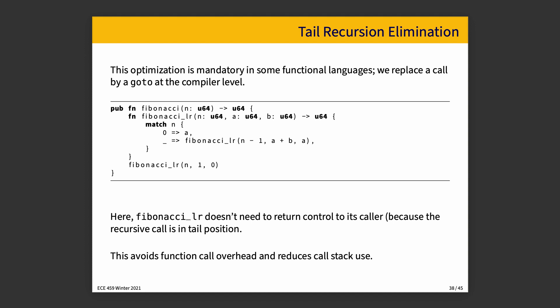And then there is tail recursion elimination, the last of the whole program optimizations we want to talk about. And this optimization is mandatory in some functional languages. And we can do this where we replace a call by a go-to at the compiler level. Oh, no, I said a bad word again. Yeah, and that is here that if you have a function here, Fibonacci and the internal function Fibonacci LR doesn't have to return control to its caller because the recursive call is in the tail position. That is to say, if we're returning a value from function A that's going to be returned as the value from the caller, so function A is called by B, and the return value of A is then immediately taken by B and is the return value of B, you could skip all of that and you could just send this data back in a more efficient route. And that is actually tail recursion elimination.